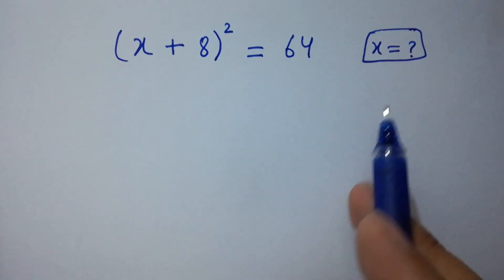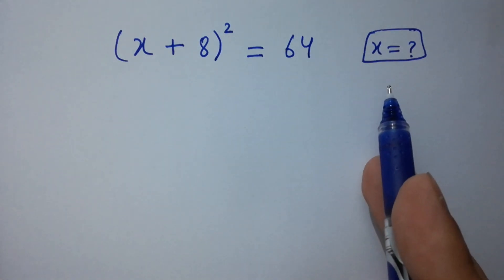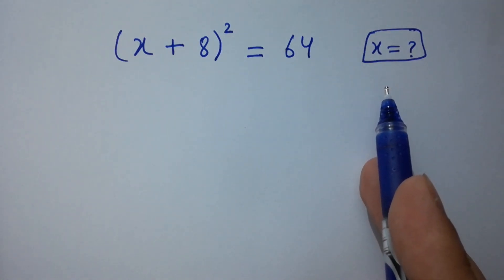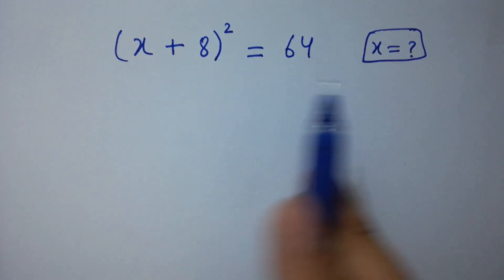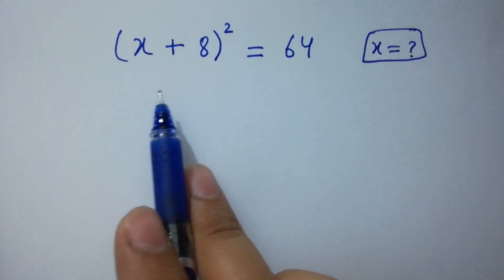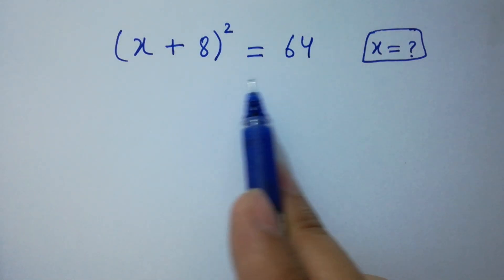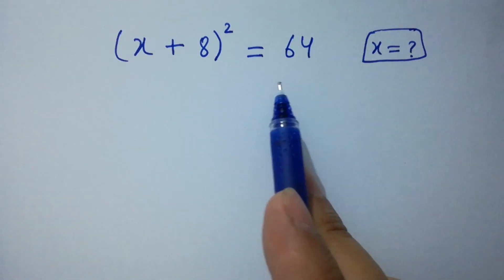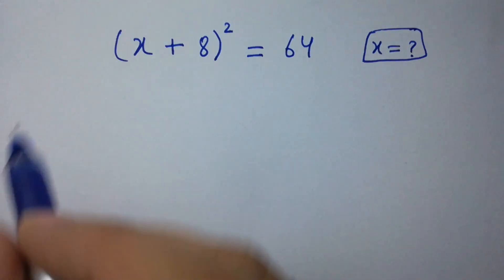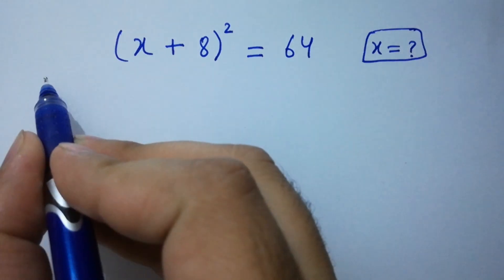Hello friends. Find the value of x if (x + 8)² = 64. Let's have a solution.